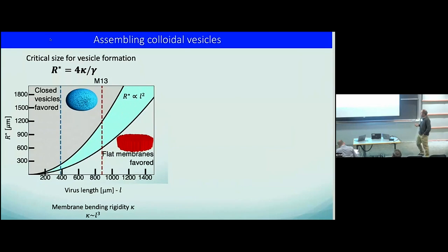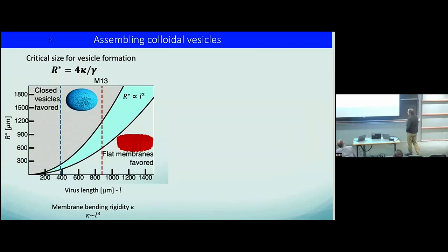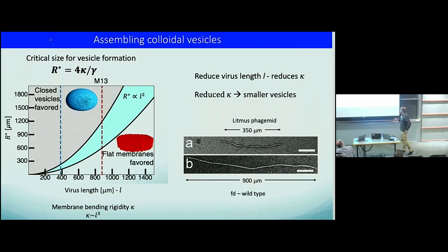We know what the bending rigidity is and we know what the edge tension is, which tells us at what point these things should fold up into a closed sheet. The wild type virus is of the order of one micron. If I increase the diameter, this flat sheet should close up into a vesicle — but this would happen when the sheet is of the order of one millimeter, which we'll never see. The way I can reduce this critical size is by reducing the virus length, since bending rigidity goes as virus length cubed.